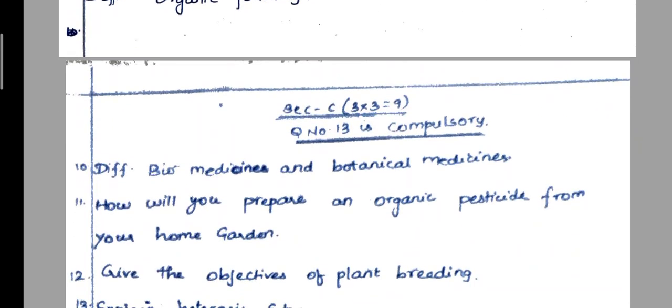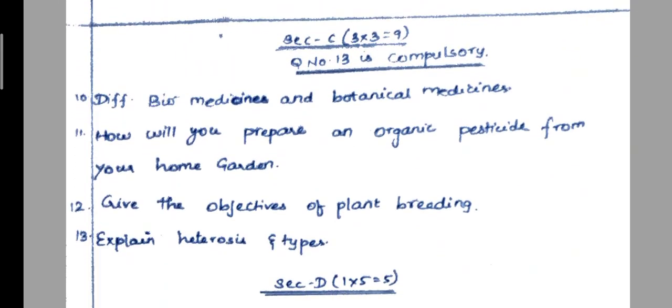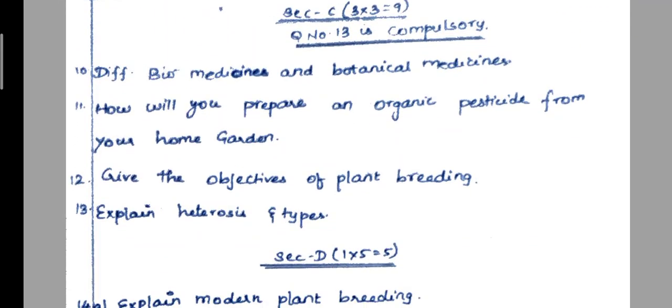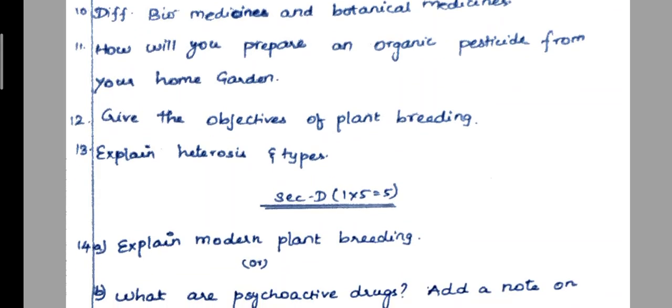Section C, 3 marks. 10th question: difference between biomedicine and botanical medicine. 11th question: how will you prepare an organic pesticide from your home garden? 12th question: what is the importance of plant breeding?